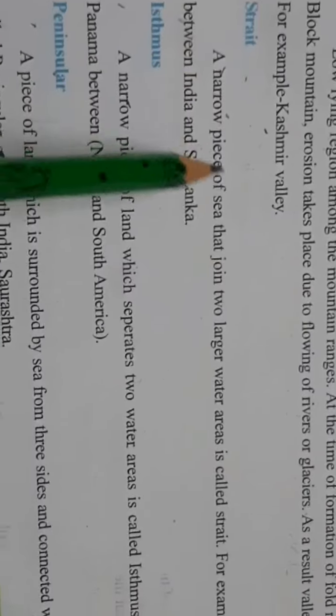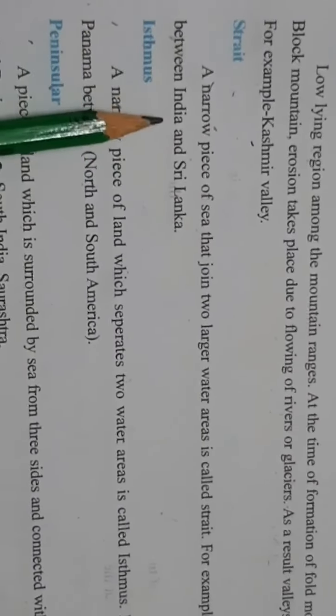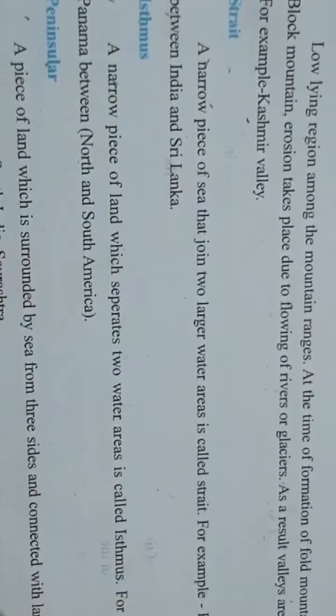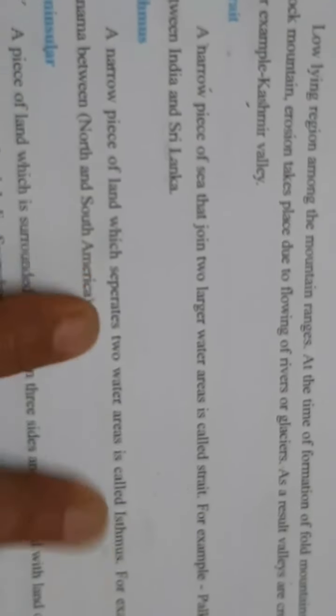Now, strait. A narrow piece of sea that joins two larger water areas is called a strait. For example, Palk Strait between India and Sri Lanka. Yani ek narrow piece hota hai sea ka, jo dho bade water areas ko join kerta hai — that is called a strait. Aur Palk Strait India and Sri Lanka ki beech mein jo hai, patla sa area, jo dho water bodies ko join kerta hai — that is called a strait.